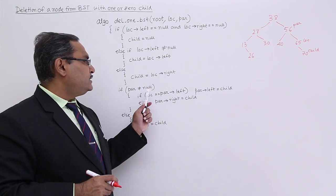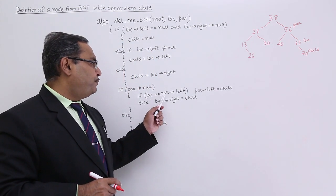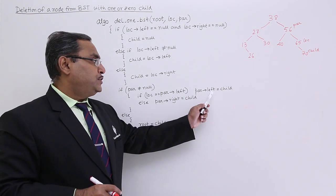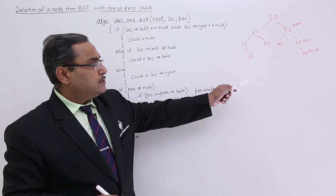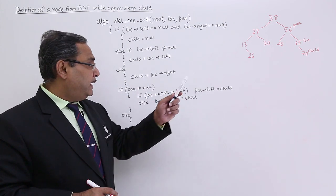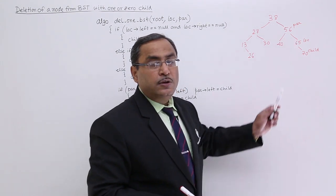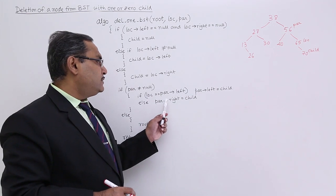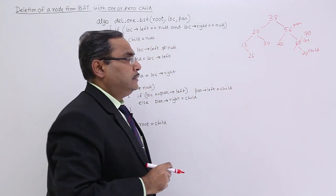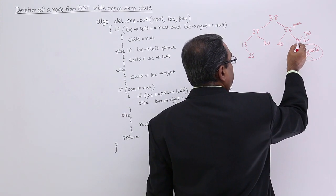If par is not null, meaning the parent exists, we check: if loc equals par→left, then par→left is set to child. Otherwise, par→right is set to child. In this case, loc is the right child of par, so the else part executes: par→right equals child. So the child pointer takes the place of the deleted node, and 65 gets deleted from the tree.